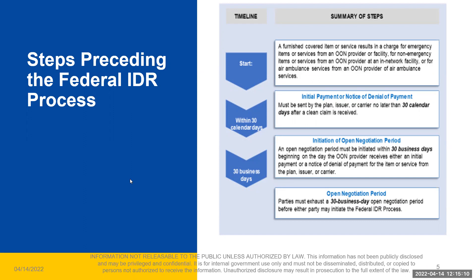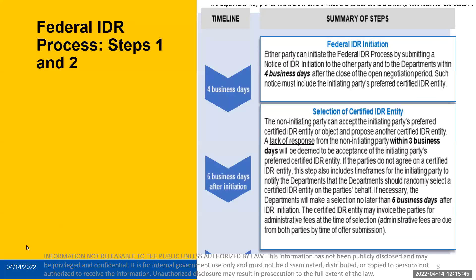In some cases, we are having to reach back out for information if the provider hasn't proactively provided that to us. The current open negotiation notice requires a description of the item or service, which should include information that sufficiently identifies the items or services being disputed. Updated guidance that the departments have posted notes that as part of open negotiations, the non-initiating party can request that the initiating party provide additional information that will identify the claim in dispute, such as a claim reference number or the location of the service.